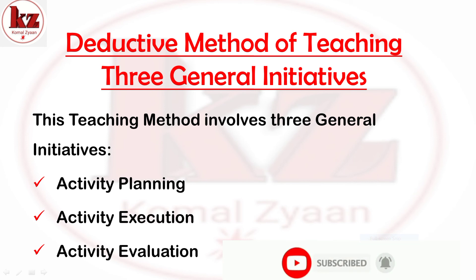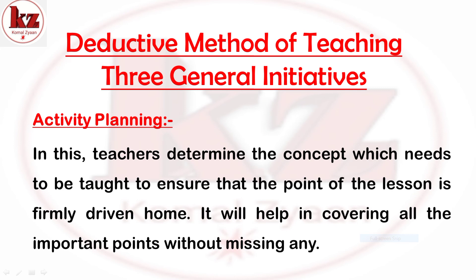This teaching method involves three general initiatives. First is activity planning, second is activity execution, and third is activity evaluation. First we make a plan — we create an agenda on which we have to work. Then we implement that planning — whatever is in our mind and on paper, we have to execute it. Finally, we review and evaluate the topic, and the topic is completed.